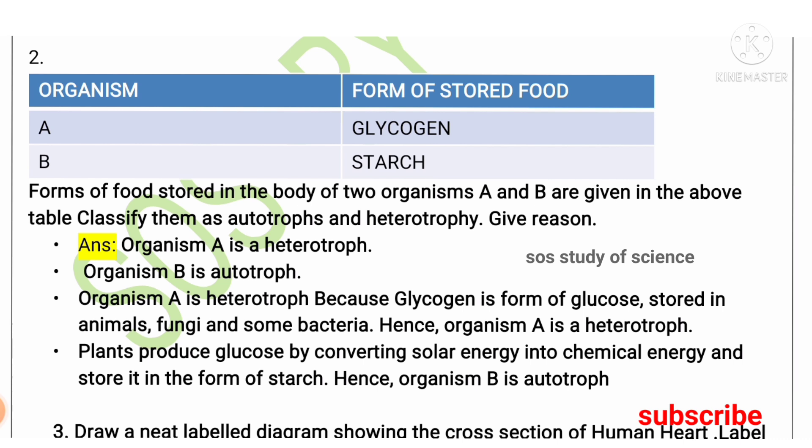Organism A is a heterotroph — heterotrophs are organisms which depend on others for their food, such as human beings, some bacteria, and some fungi. In the body of heterotrophs, food is stored in the form of glycogen. Organism B is an autotroph because starch is the form of food stored in the body of autotrophs, which are plants. In the plant's body, food is stored in the form of starch.